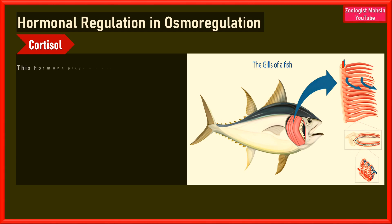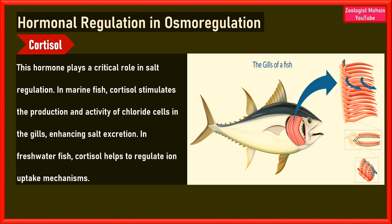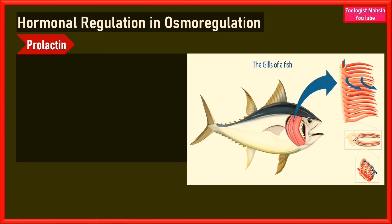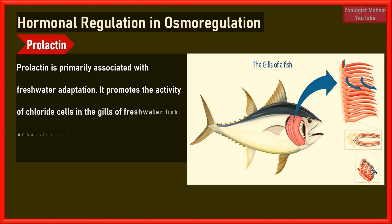Now let's discuss some hormones that help regulate osmoregulation in fishes. Number one: cortisol. This hormone plays a critical role in salt regulation in marine fishes — it stimulates the production and activity of chloride cells in the gills, enhancing salt excretion. In freshwater fish, cortisol also helps regulate ion uptake mechanisms. Number two: prolactin. Prolactin is primarily associated with freshwater adaptation; it promotes the activity of chloride cells in the gills of freshwater fish, enhancing salt uptake and reducing water permeability.